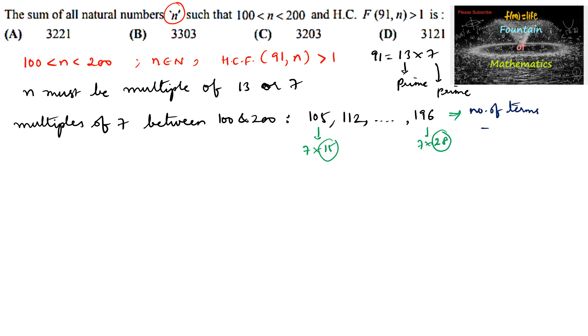Number of terms is equal to 28 minus 15 plus 1, so that is 13 plus 1, which is 14. So 14 numbers are there. So the sum of 14 numbers.